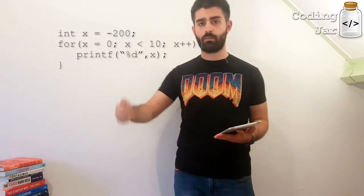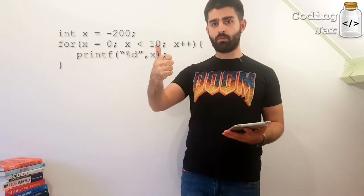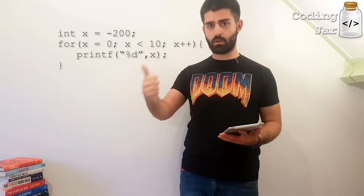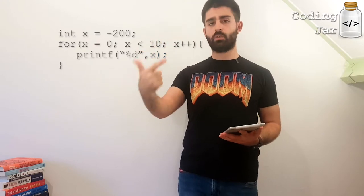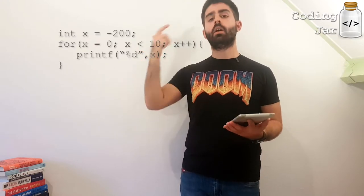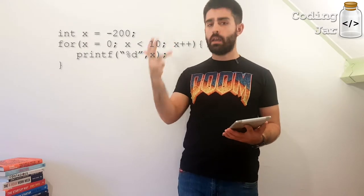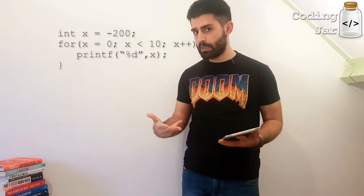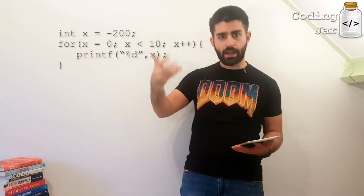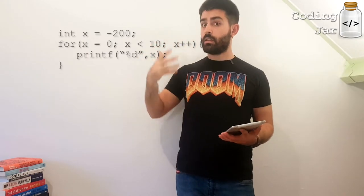That in essence means that we have x equals 0, condition met, prints 0. X equals 1, condition met, prints 1. X equals 2, condition met, prints 2. X equals 3, condition met, prints 3, yada yada yada.